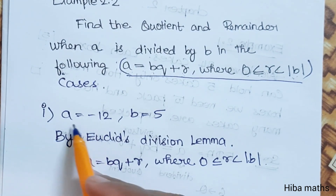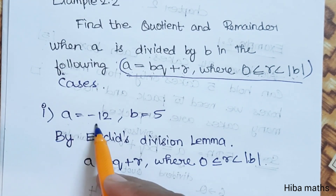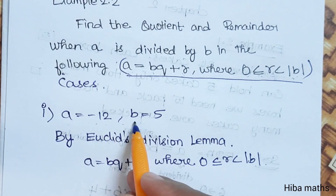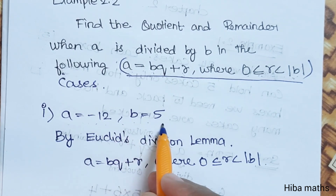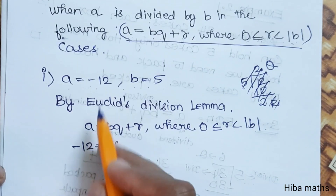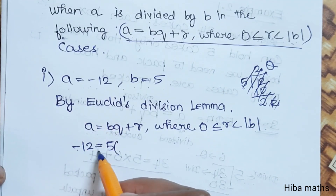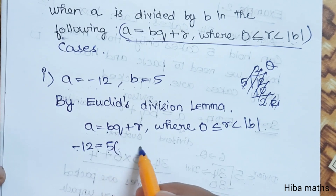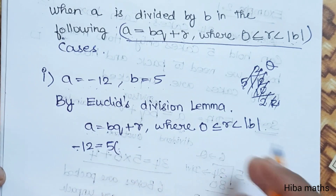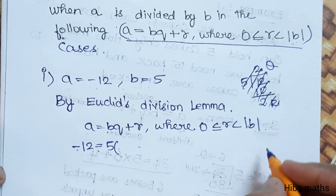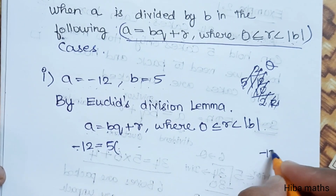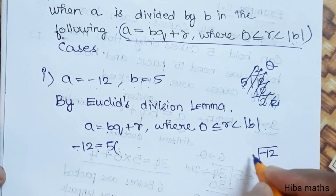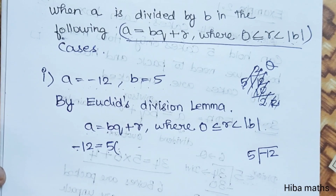Now, first question: a is equal to minus 12, b is equal to 5. We need to find the quotient and remainder. So we solve minus 12 divided by 5. We try 5 times 2 is equal to 10, but that gives us a negative value of 10.